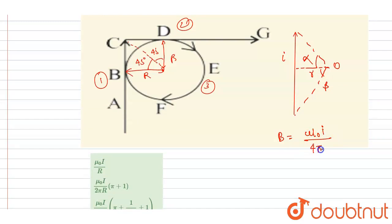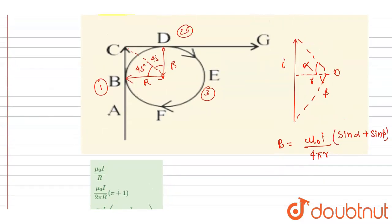Sin alpha plus sin beta. Now if you see, if I talk about alpha and beta, here the alpha is 45 degrees, beta is 90 degrees. If I talk about the direction because of this one, so if you keep your thumb with the direction of current and curl your finger, you will get inward direction.